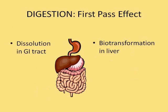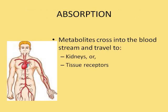Drugs that do go to the stomach have to be broken down through digestion — quite often that's called dissolution — into a form that can be absorbed by the body. Biotransformation also occurs in the liver, where the drug is further broken down into metabolites that can be used in treatment. These metabolites cross into the bloodstream, where they either travel to the kidneys and are eliminated, or they make it to the tissues where they are picked up by receptors and treatment begins.